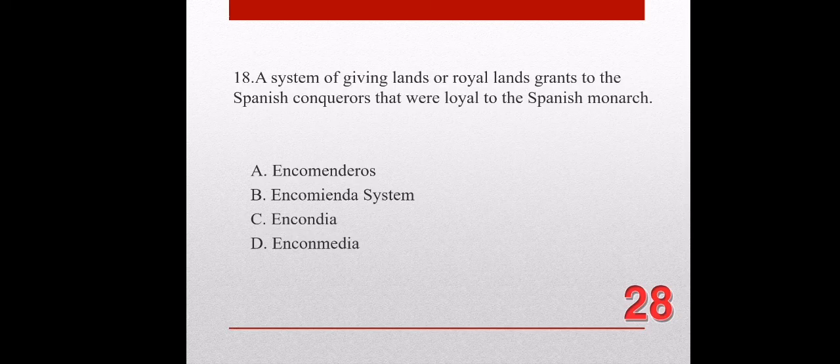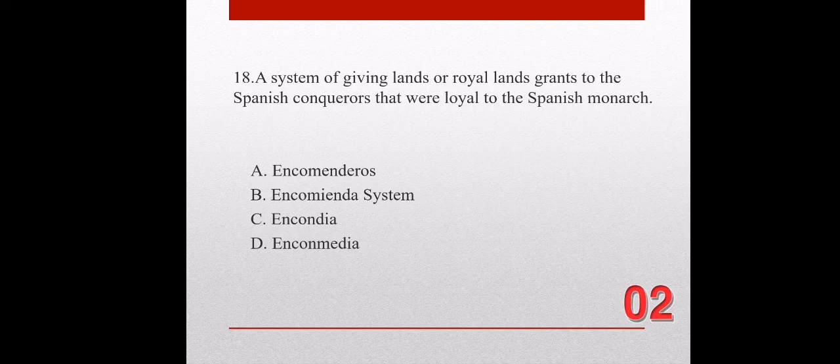Question number eighteen. A system of giving lands or royal land grants to the Spanish conquerors that were loyal to the Spanish monarch. A. Encomenderos. B. Encomienda System. The correct answer is letter B, Encomienda System.